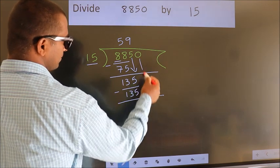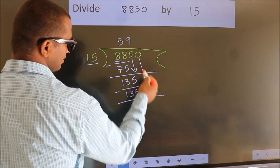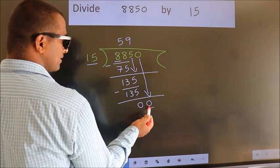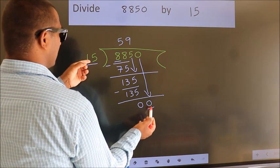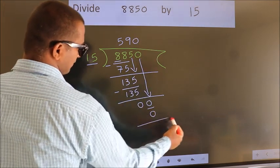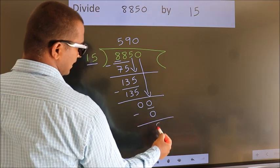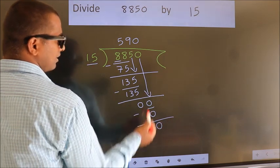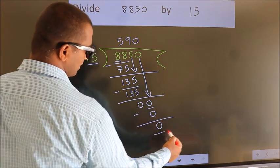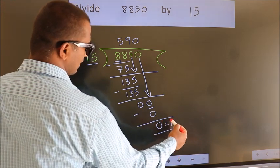After this, bring down the beside number. So 0 down. So 0. When do we get 0? In 15 table, 15 zeros, 0. Now we subtract. We get 0. No more numbers to bring it down. So we stop here. This is our remainder. This is our quotient.